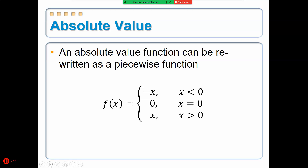An absolute value function, as previously stated, can be written as a piecewise. If you think back to solving absolute value equations, you had to split the absolute value into a positive and negative solution. Those solutions came from where the graph of the absolute value crossed the x-axis.